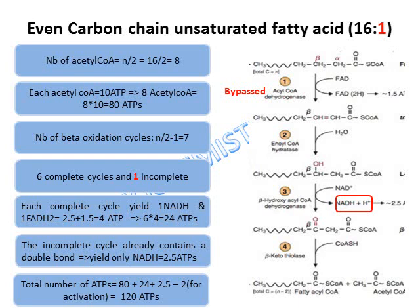For an odd-carbon-chain unsaturated fatty acid, the number of acetyl-CoA = N/2 − 1, and the number of beta-oxidation cycles is also N/2 − 1. The number of incomplete cycles equals the number of unsaturations (1 unsaturation = 1 incomplete cycle, 2 unsaturations = 2 incomplete cycles), and the sum of complete and incomplete cycles equals the total cycle count.